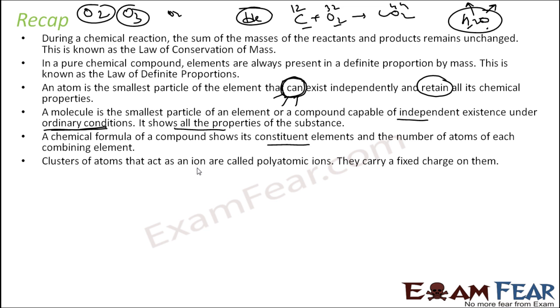Clusters of atoms that act as ions are called polyatomic ions and they have charges. For example, SO4 2-, NO3-, CO3 2-. These are all polyatomic ions.